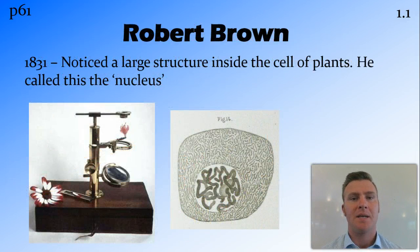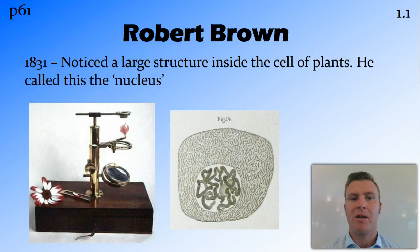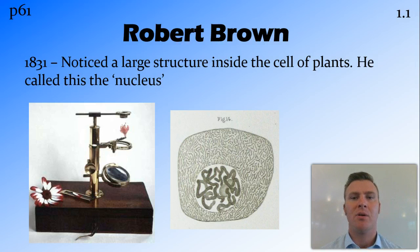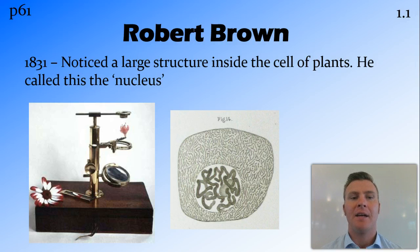Many years later, in 1831, Robert Brown came along. The lenses had got better and better by this stage, and by looking at some plants through a microscope he was able to see a large structure inside the cell. He called this the nucleus.